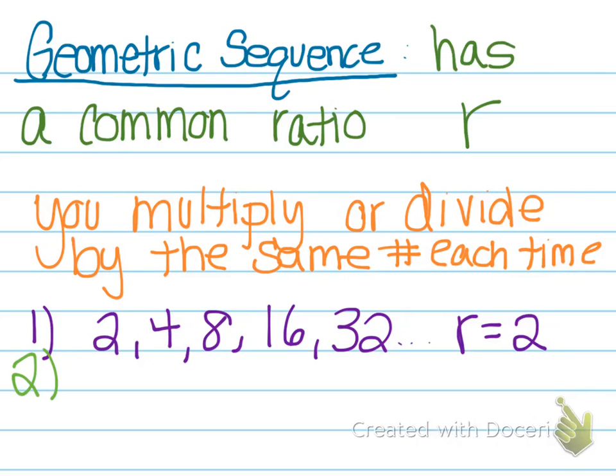If I gave you 27, 9, 3, 1, the common ratio r would be 1 third. You could say you're dividing by 3 each time or you're multiplying by 1 third each time.